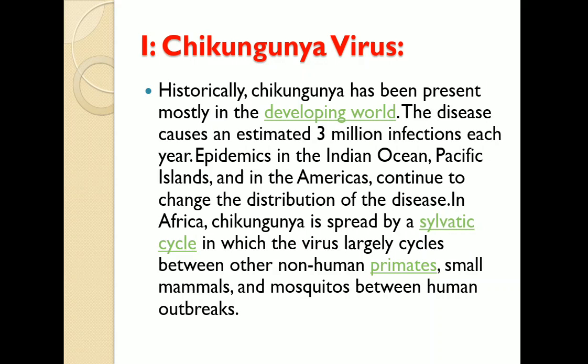During an outbreak, due to high concentration of virus in the blood of those in the acute phase of infection, the virus can circulate from humans to mosquitoes and back to humans. Transmission of the pathogen between humans and mosquitoes exists in urban environments and was established on multiple occasions from strains occurring in the eastern half of Africa and non-human primate hosts.